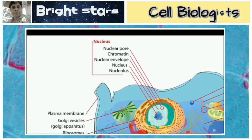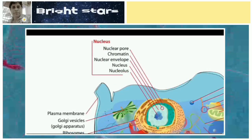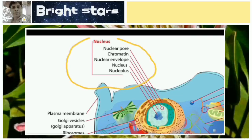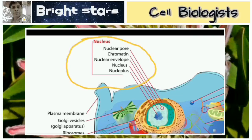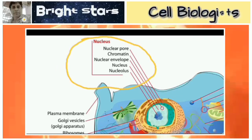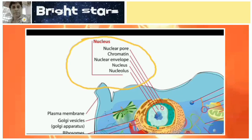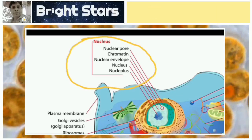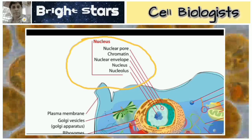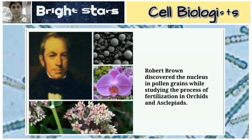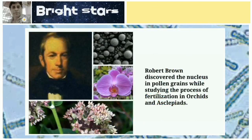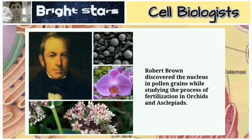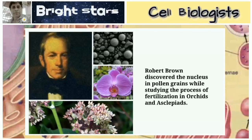The dynamic center of the cell is the nucleus, which controls different functions of the cell. Robert Brown discovered the nucleus in pollen grains while studying the process of fertilization in orchids and aquatic plants.